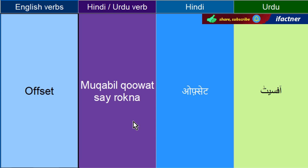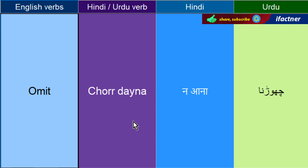Mukaabil kuwat say roknay ko kehthay hai — Offset kerna. Koyi aap peh hamla kerhaya aur aap usse rokthay hain, to usse aap offset kerthay hain. Chhoor daynay ko kehengay — Omit kerna. Mitaa dayna. Oonghne ko kehthay hain — Ooze.